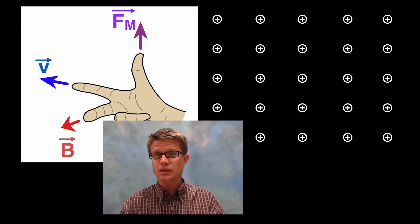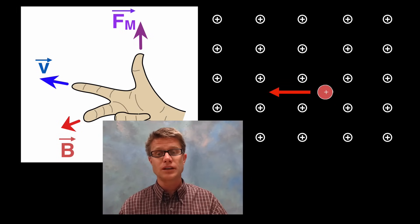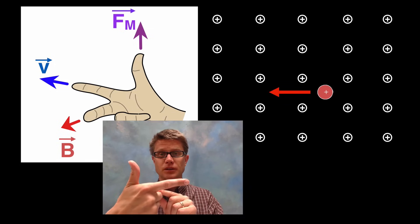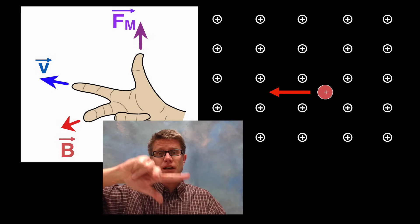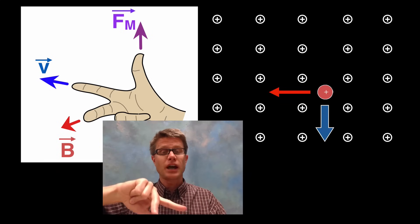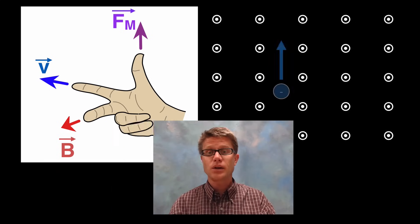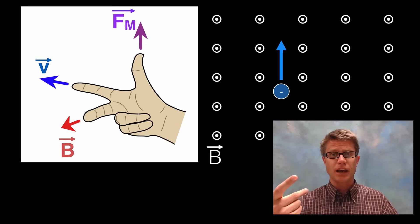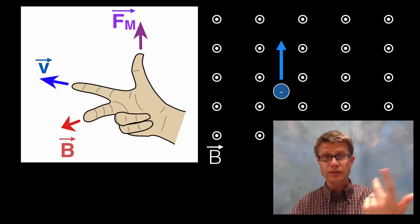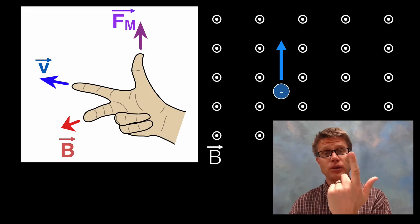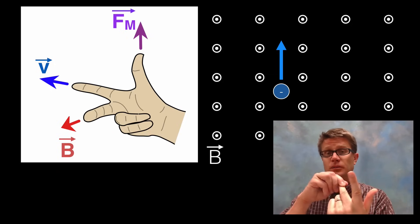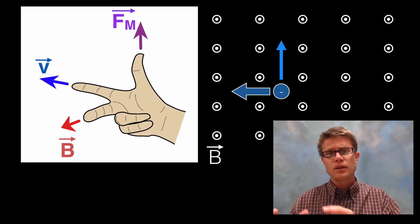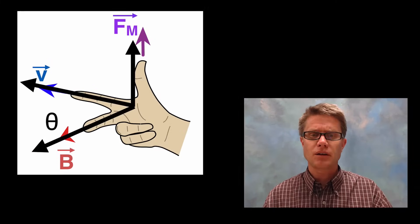Now with a different magnetic field, a proton is moving from right to left. Point your index finger to the left for the movement of the particle. The magnetic field is not coming towards you — it's going away from you — so turn your hand accordingly, and you can see the magnetic force is acting downward. What if we have an electron moving? You could use your right hand and then reverse the force at the end, or simply use your left hand. Point your index finger in the direction of the electron's movement, middle finger toward you for the magnetic field, and the force is going to be to the left.